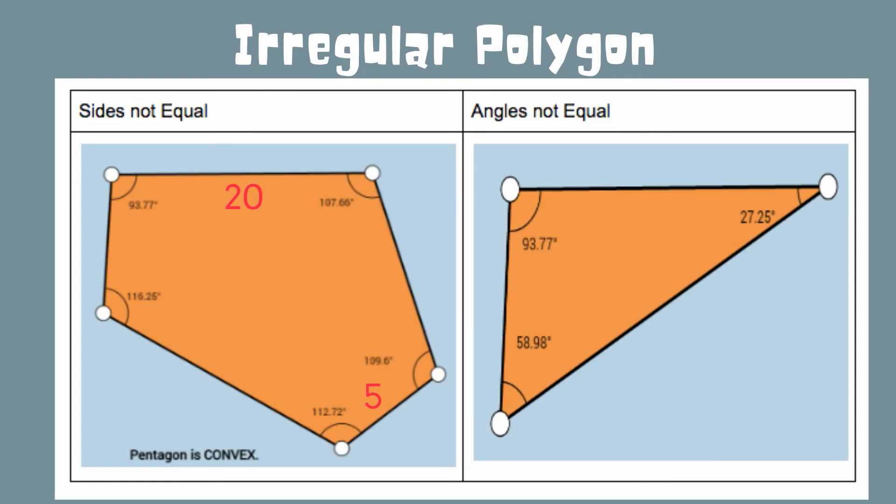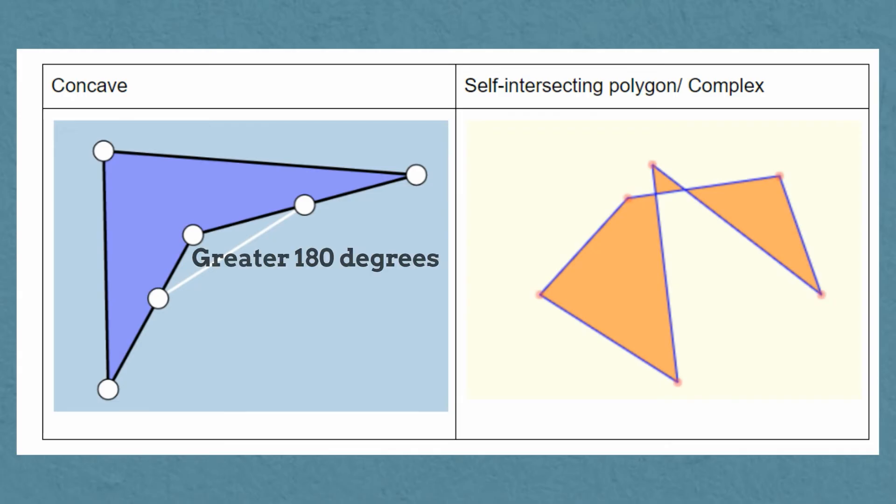Irregular polygons can also have different numbers of sides. Some are concave, which means they have at least one angle greater than 180 degrees. They can also be complex, which is also called self-intersecting.